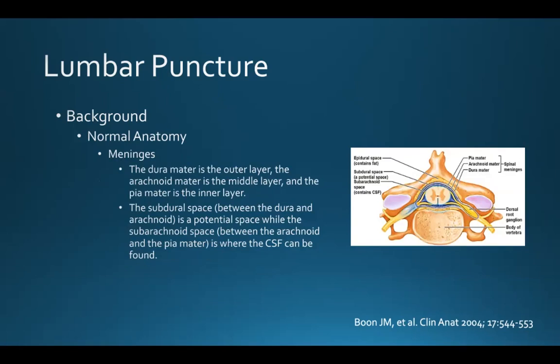When we look at the meninges, the dura is the outer layer, the arachnoid is the middle layer, and the pia mater is the inner layer. The subdural space between the dura and arachnoid is a potential space, while the subarachnoid space — between the arachnoid and pia mater — is where CSF can be found.